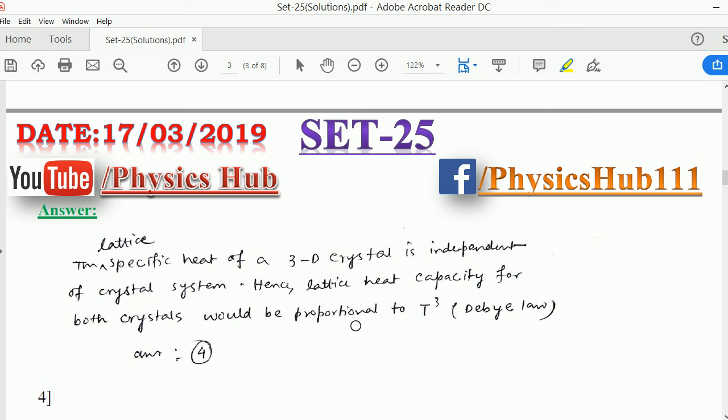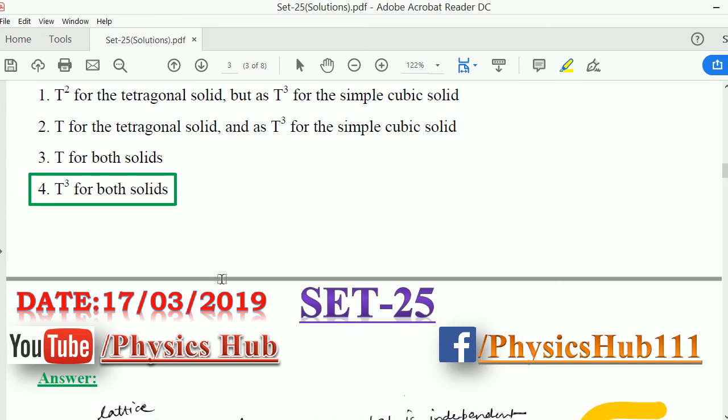Now as you know, the lattice specific heat of a 3D crystal is independent of the crystal system. Hence, lattice heat capacity for both crystals would be proportional to T cubed. So initially, in low temperature regime, it is T cubed showing a dependence of T cubed. And later on, it is constant and gives value of 3R. So option 4 is the correct option.